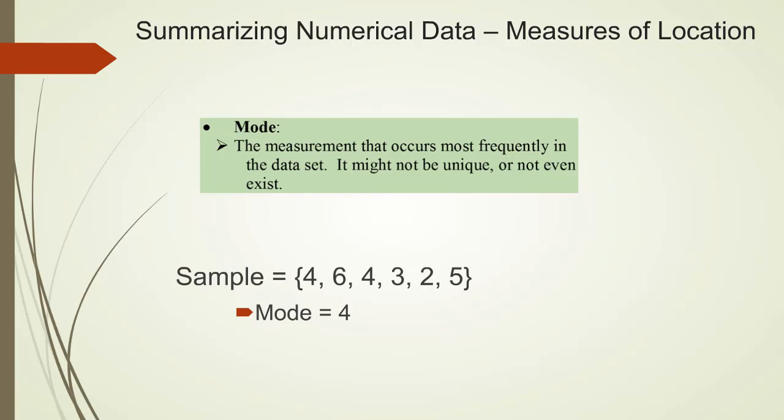Let's continue with the remaining measures of location. Mode is the value of measurement that occurs most frequently in the dataset. It might not be unique or not even exist. For the example we looked at earlier, 4 occurs twice in this series, while all other values only occur once. So 4 is the mode. You may probably have heard the word bimodal or multimodal, which represent that the set of observations have two modes or multiple modes respectively.